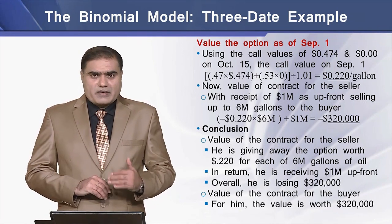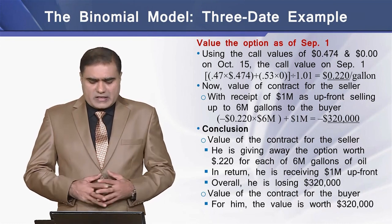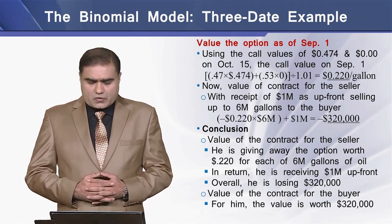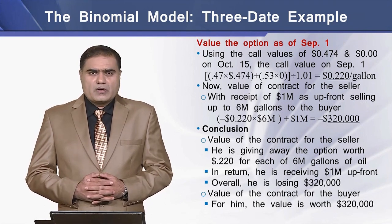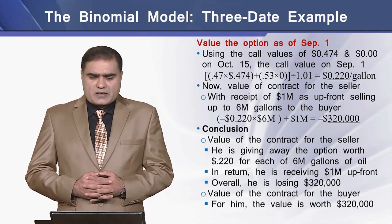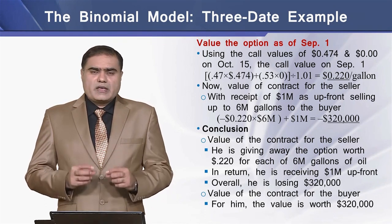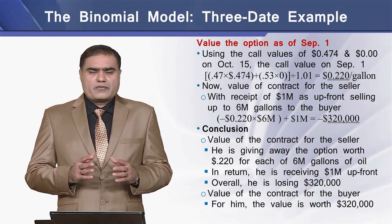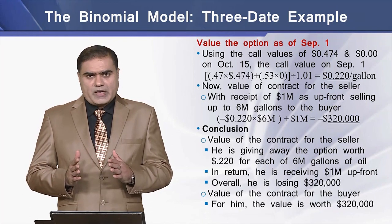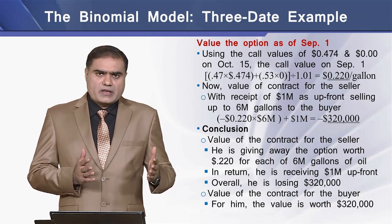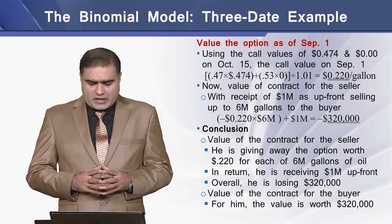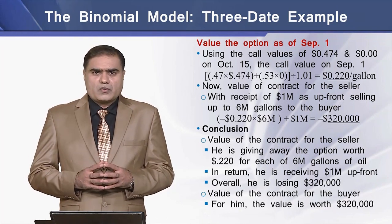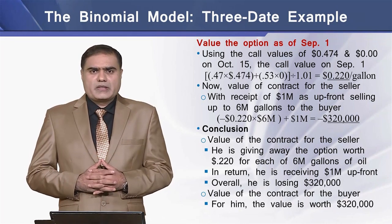In giving up this option, the seller receives $1 million upfront, and his overall loss is equal to $320,000. Since the loss of the seller is the gain of the buyer, the loss of $320,000 suffered by the seller is the gain of the buyer. So for the buyer, the worth of this call contract is equal to $320,000.